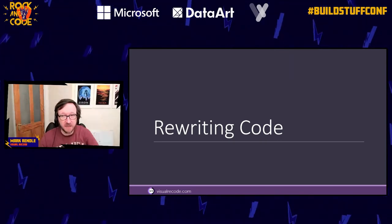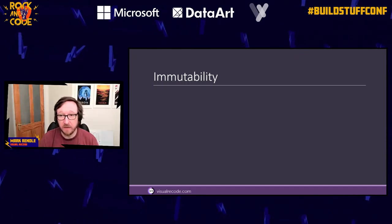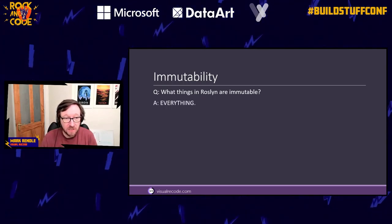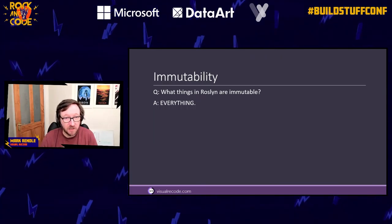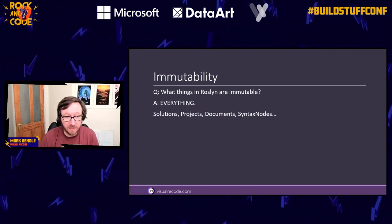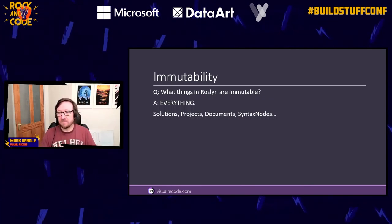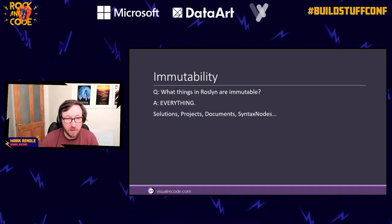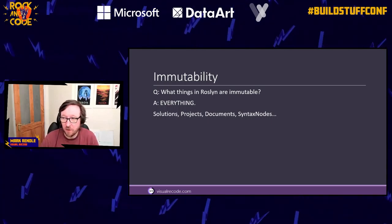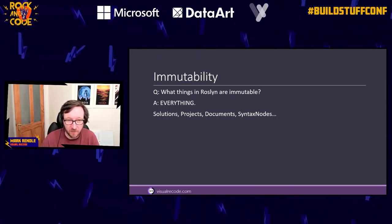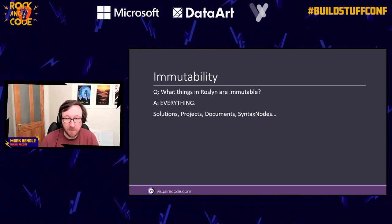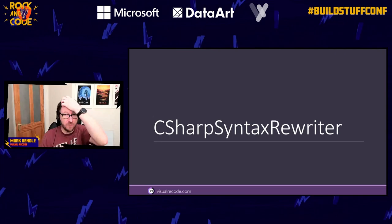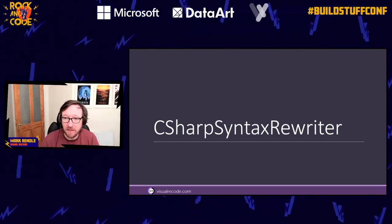Let's talk about rewriting code, which is obviously trickier than understanding code. For this we need to talk about Roslyn and immutability. Basically everything in Roslyn is immutable - if you change something, you don't change it, you get a new copy with the change made. That applies to the solution, projects, documents, and syntax nodes. There are methods to replace a syntax node or identifier token or add trivia, but they return a new syntax node rather than changing the existing one.